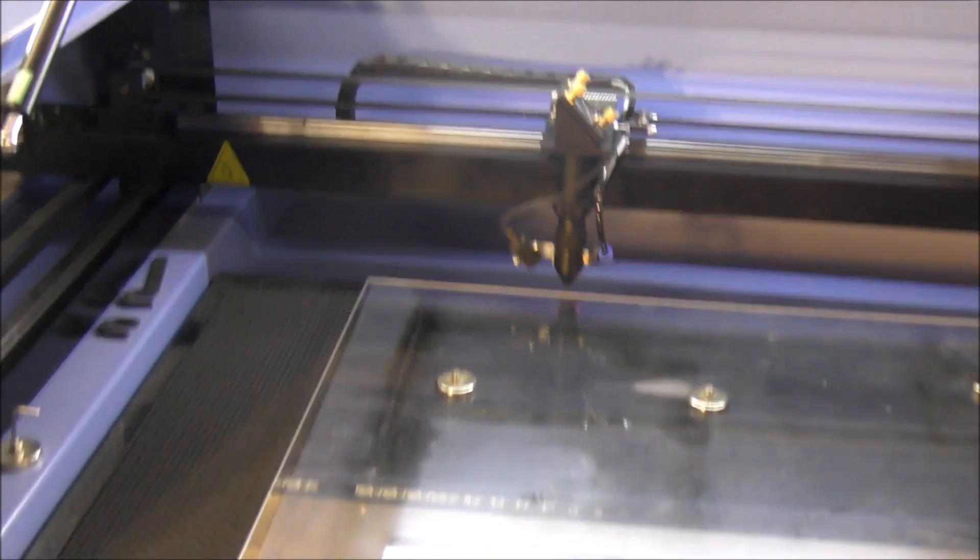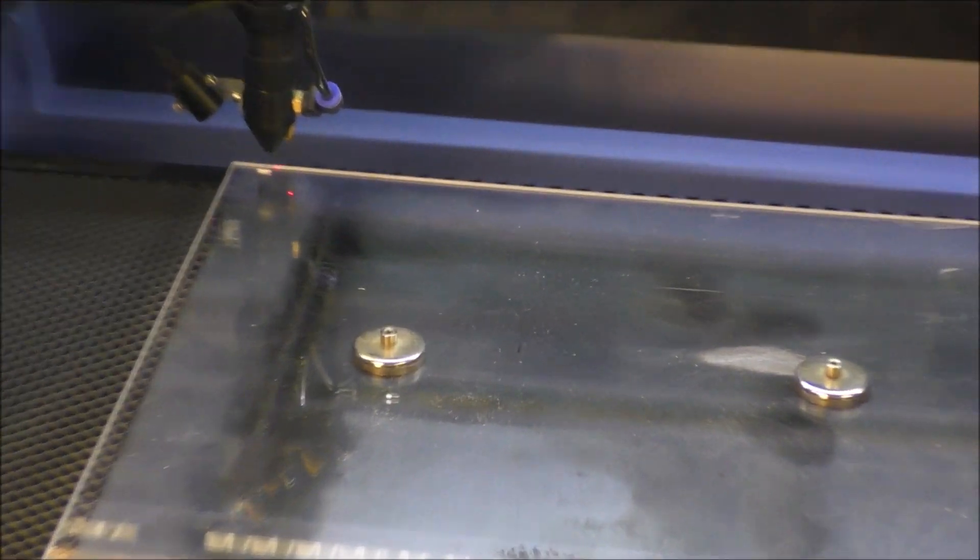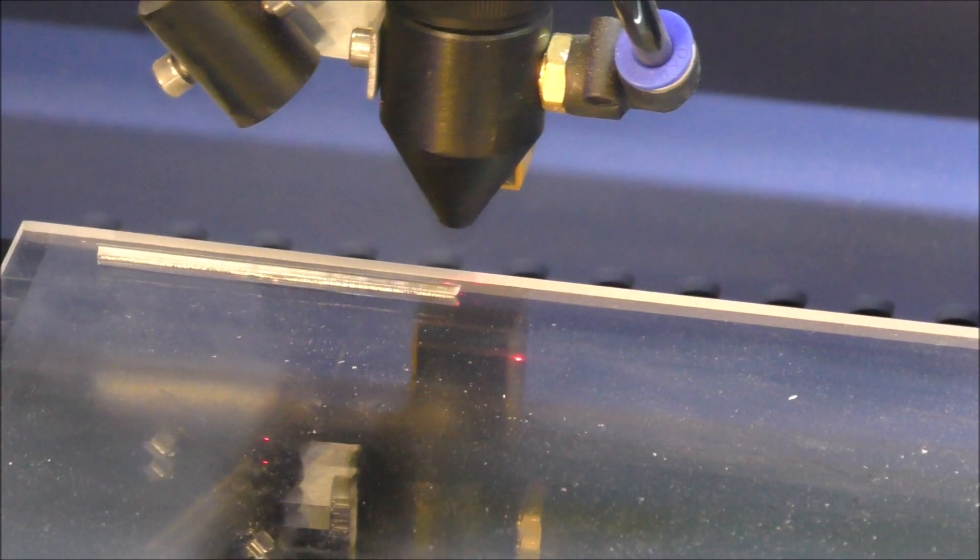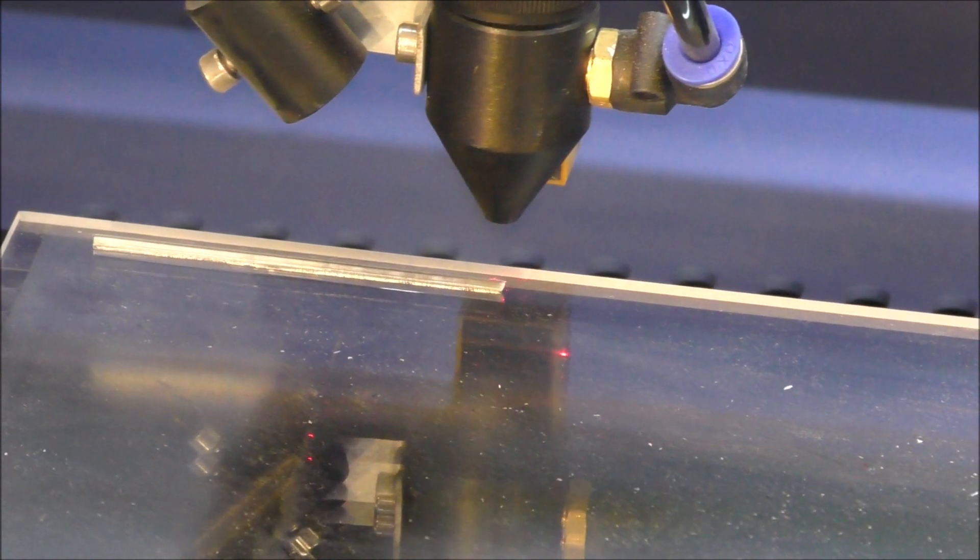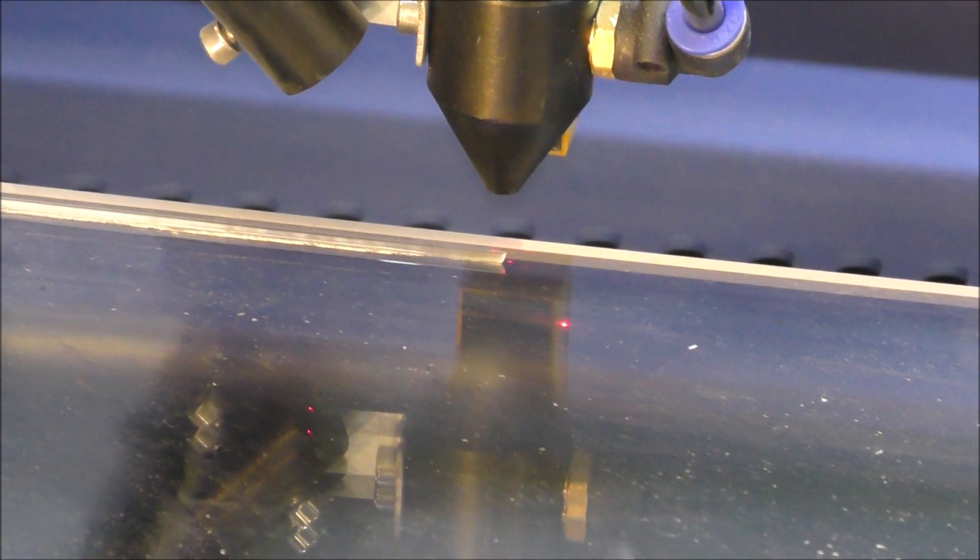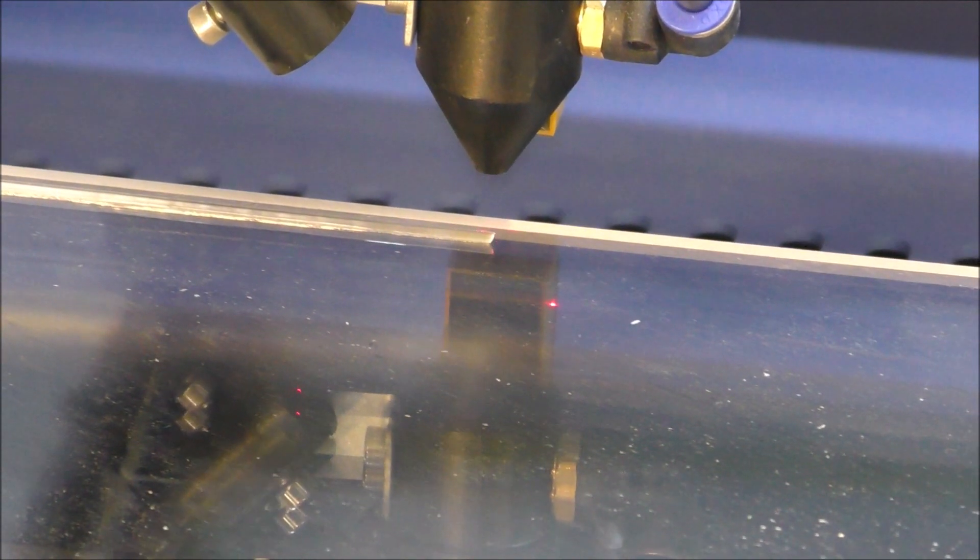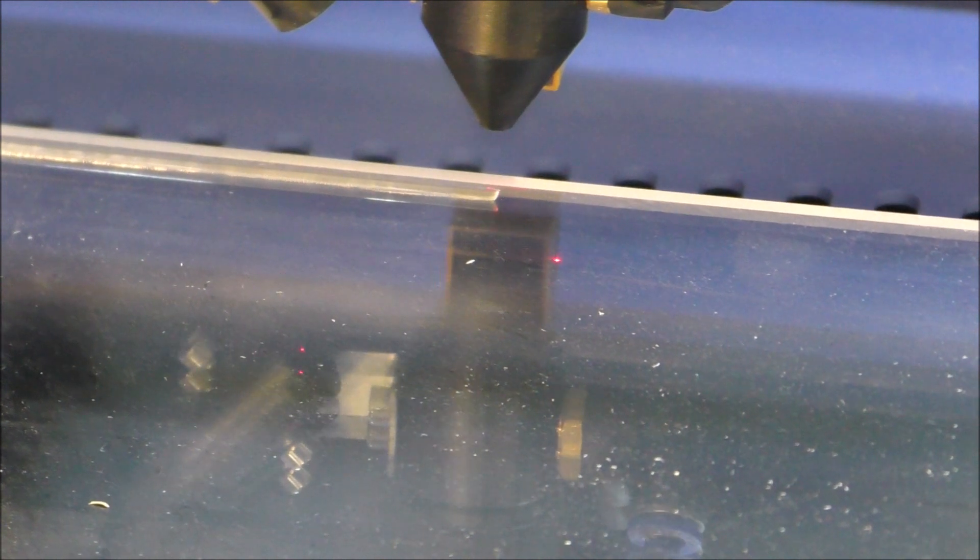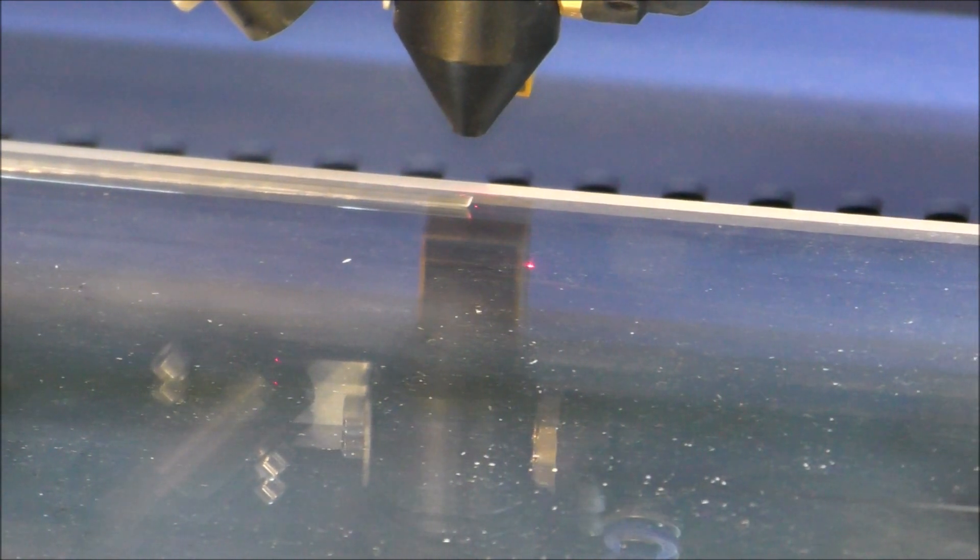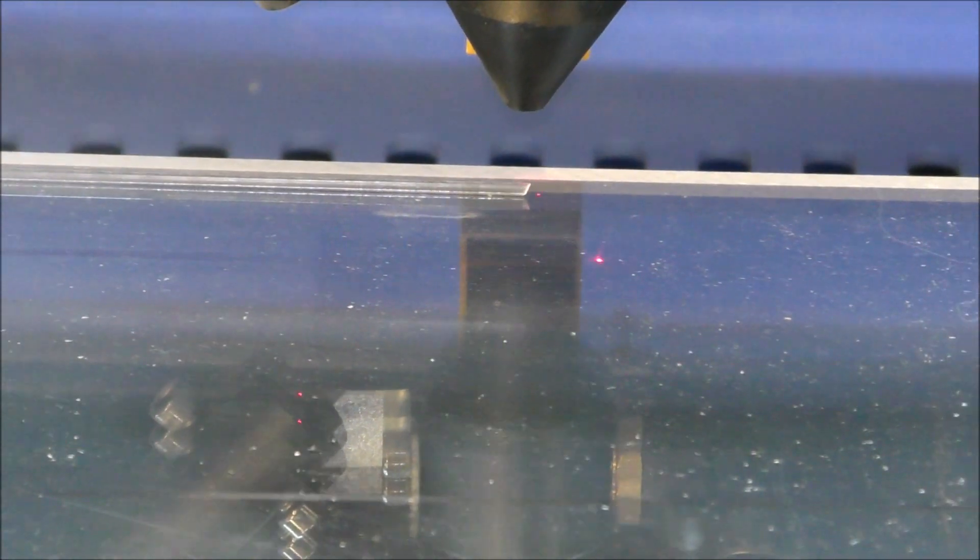Now a couple of things to note here—this is beam drag. If you notice where the laser enters the top layer of the plexiglass but where it exits at the bottom, you can see there's an angled lag of cut. This is called beam drag.